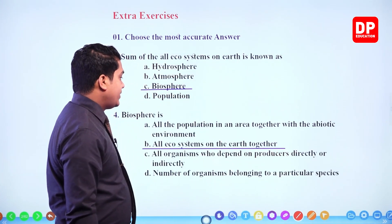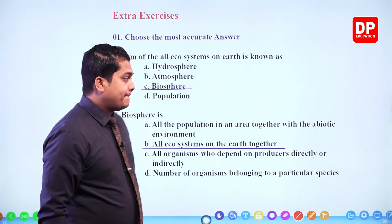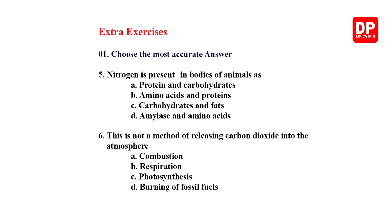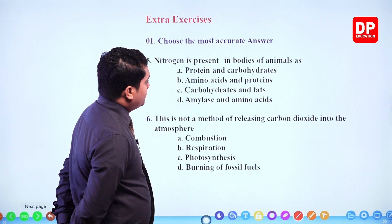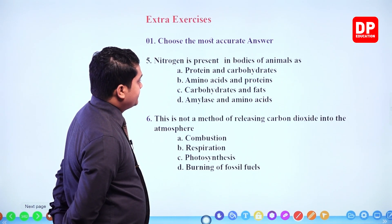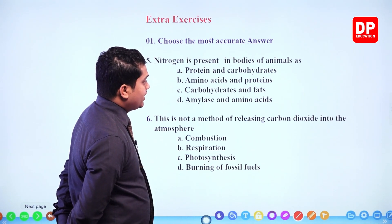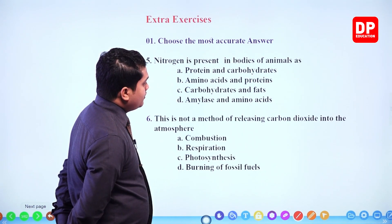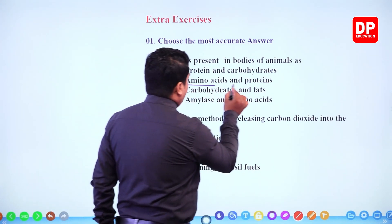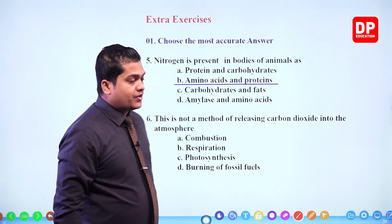Next one: nitrogen is present in bodies of animals as — proteins is a good example of a nitrogen-based compound, and amino acids, like DNA and RNA. Looking at the answers: protein and carbohydrates — protein is correct but carbohydrates contain only carbon, hydrogen, and oxygen. Amino acid and protein — yes, that should be our answer, as within amino acids and proteins we can observe nitrogen compounds.